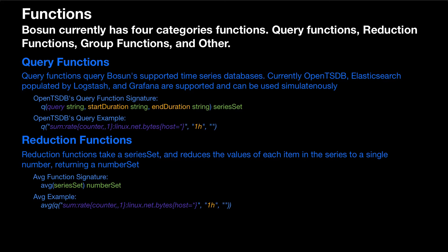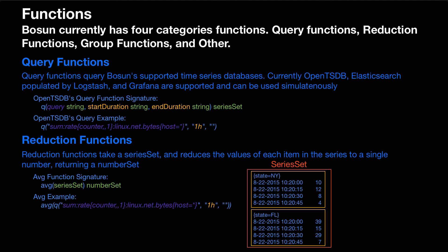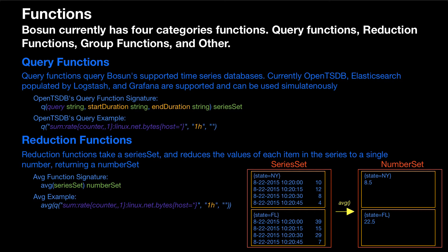For example, we would just take our previous query function, which returned a series set, and wrap it in our reduction function average. So what this looks like is we have our series set with two items, each item identified by its tag set. And then we run it through our average reduction function, and for each item in the set, we get the average of the values. And what that gives us is a number set.